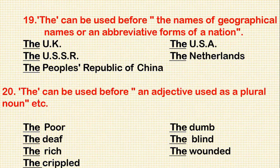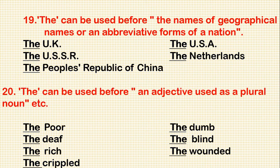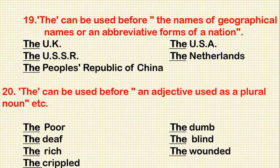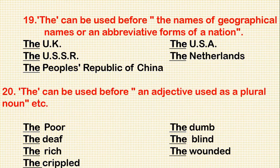Rule 19: 'The' can be used before geographical names or abbreviated forms of a nation. For example: the UK, the USA, the USSR, the Netherlands, the People's Republic of China, etc.